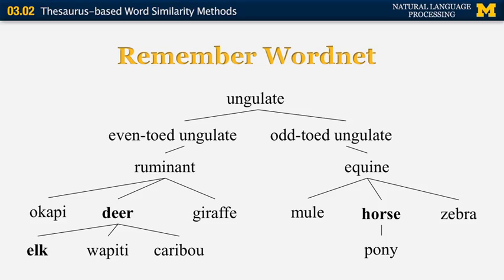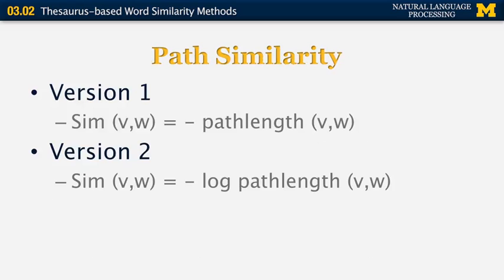Distance and similarity are related — the greater the distance, the smaller the similarity, so there's an inverse relationship between the two. If we want similarity and path length to go in the same direction, we need to put a negative sign in front of the path length. Version one of path similarity is: similarity(v, w) = –path_length(v, w). For practical purposes, it's better to take a logarithm of the path length, so version two is: similarity(v, w) = –log(path_length(v, w)).